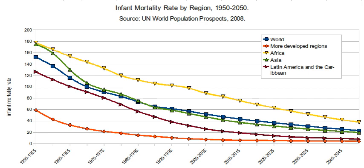Historically, males have had higher infant mortality rates than females. The difference between male and female infant mortality rates has been dependent on environmental, social, and economic conditions. Males are biologically more vulnerable to infections and conditions associated with prematurity and development. Before 1970, the reasons for male infant mortality were due to infections and chronic degenerative diseases. However, since 1970, certain cultures emphasizing males has led to a decrease in the infant mortality gap between males and females.